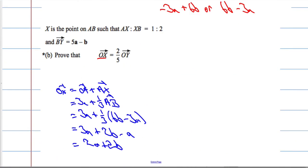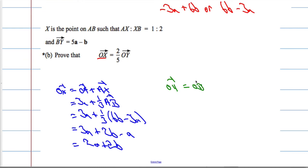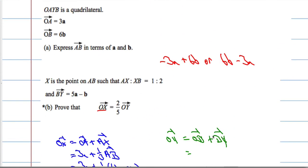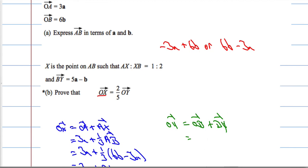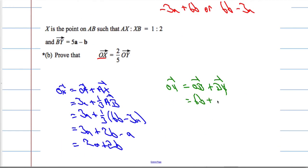So OY, let's change this now in a different color. The vector OY, this vector here, is the same as OB plus BY. OB plus BY. Now, OB, we've worked out, is 6b, or we were given 6b. And BY is 5a minus b, which will equal 5a plus 5b.